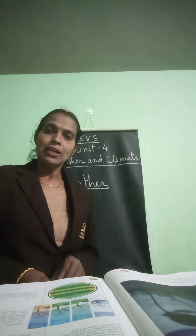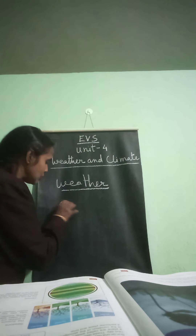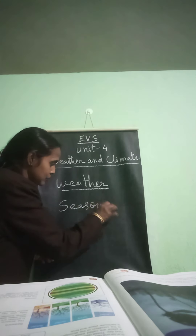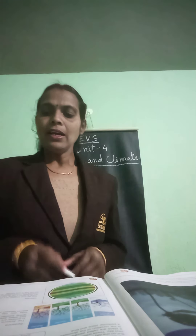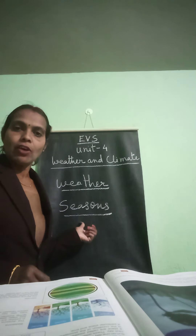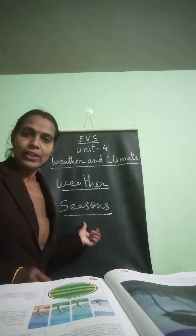Next, we are going to learn about seasons. The division of the year due to changes in the weather is called seasons. There are four major seasons in a year: Winter, Spring, Summer and Autumn. The division of the year due to changes in the weather is called seasons.